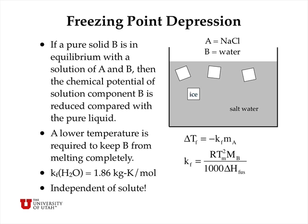We can actually calculate the freezing point depression constant from thermodynamic values. It turns out this is the gas constant R times the square of the melting point in kelvins times the molecular weight of the water divided by 1,000 — which converts the molecular weight to kilograms per mole — divided by the delta H of fusion in SI units. Notice that all of the inputs for the freezing point depression constant are independent of the solute. There's nothing here that says there's any difference between sodium chloride or sucrose for freezing point depression. So the freezing point depression constant depends only on the properties of the solvent and not the solute.